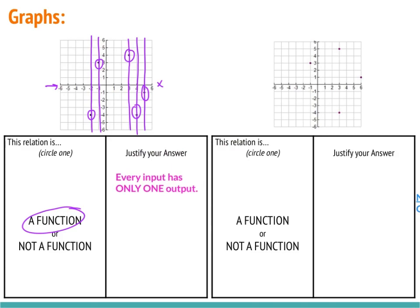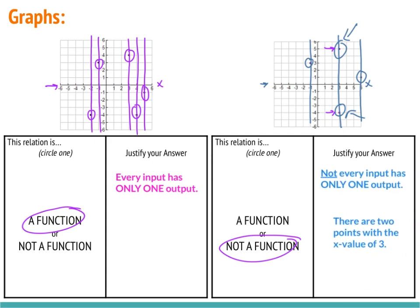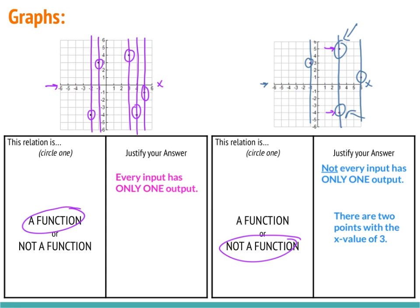We can justify by drawing lines and noticing that every point has only one place on the x axis — we could have written out each point, but that would have taken longer. Looking at our second graph, we draw lines along the x axis again because we only care about the x's. We've got one point along negative 1, but two points along positive 3, and only one point along positive 6. Those two points along positive 3 mean two different outputs: positive 5 and negative 4. So this is not a function — not every input has only one output. There are two points with an x value of 3.